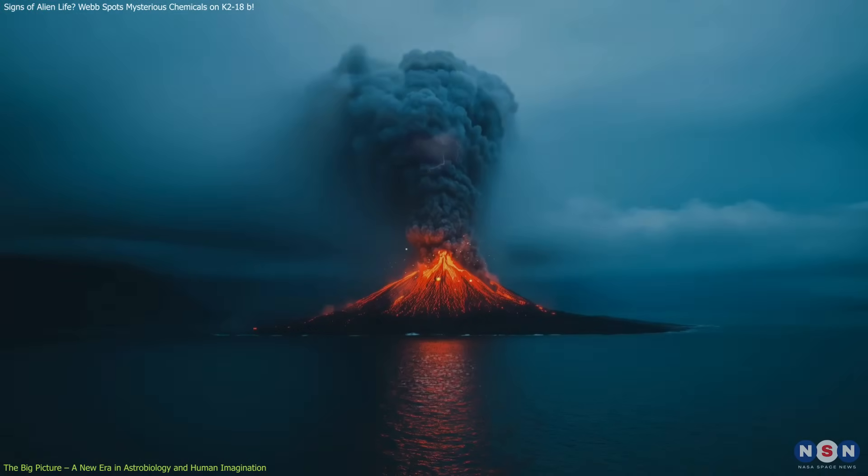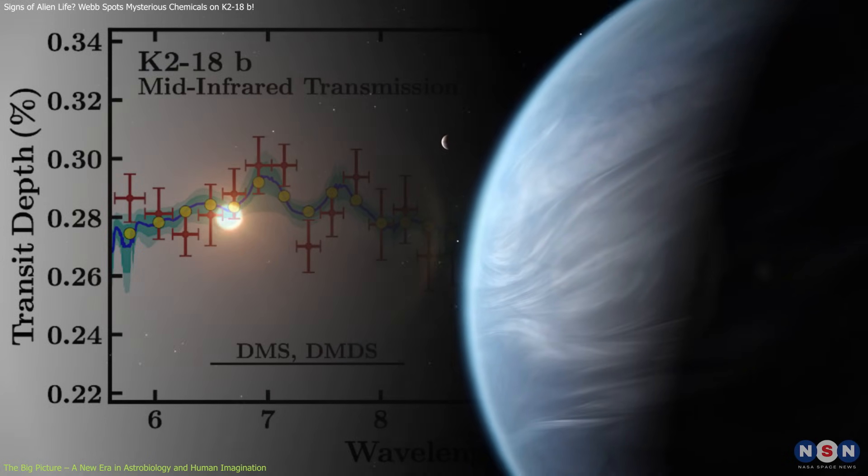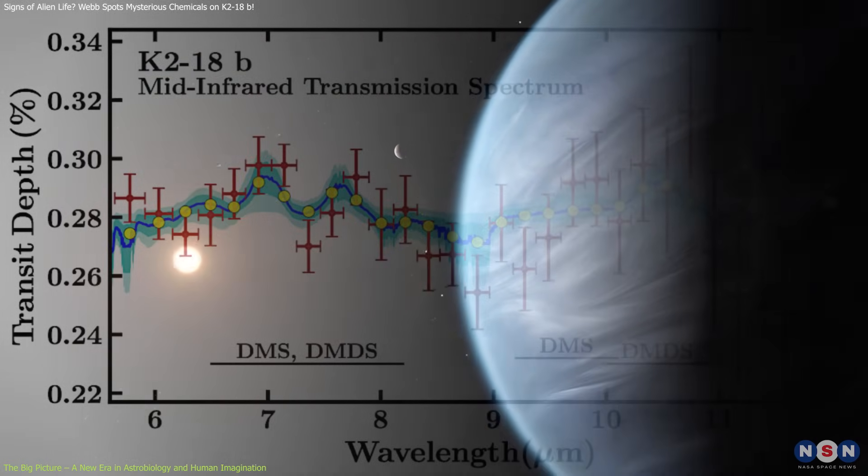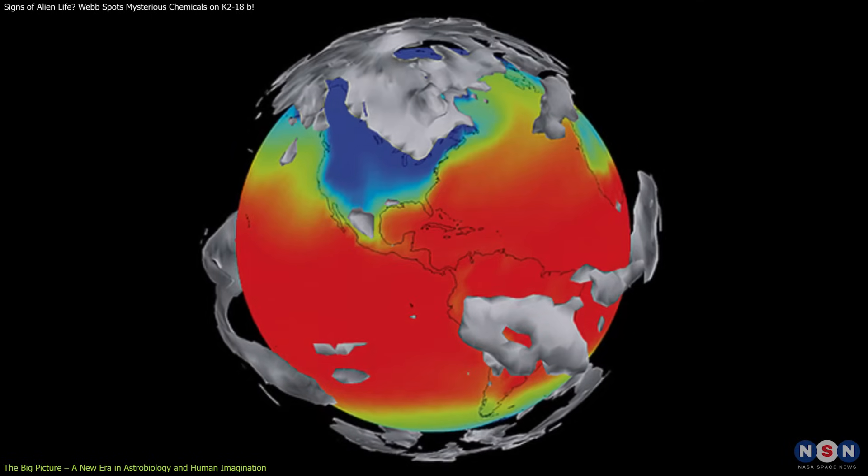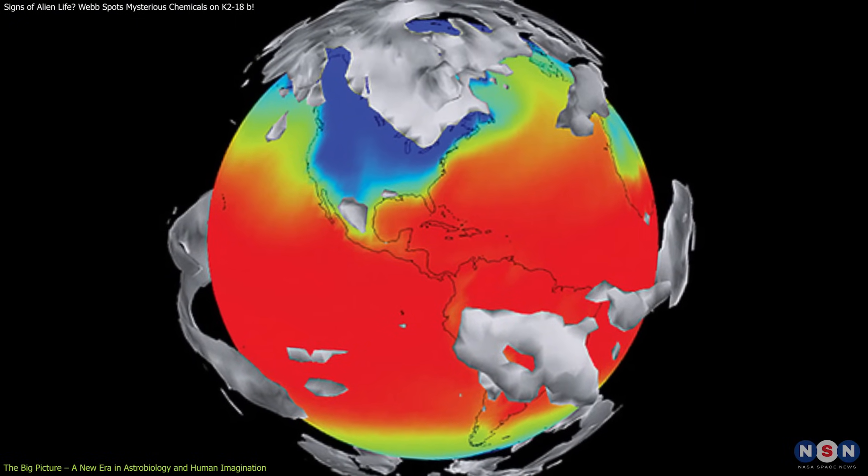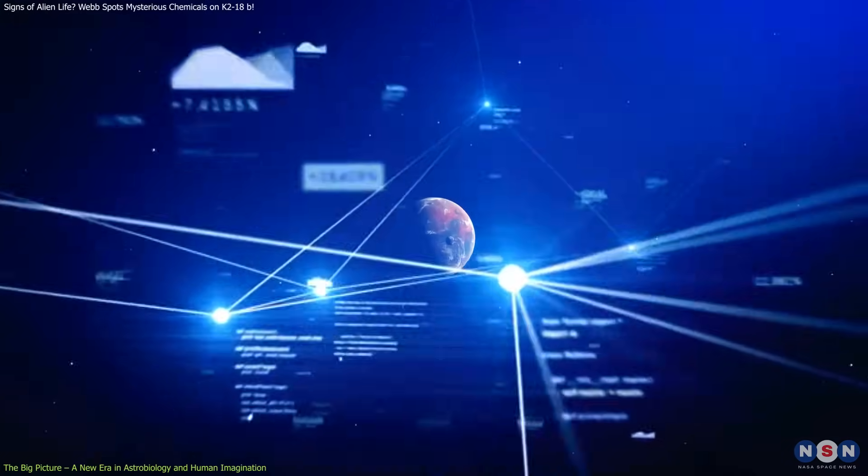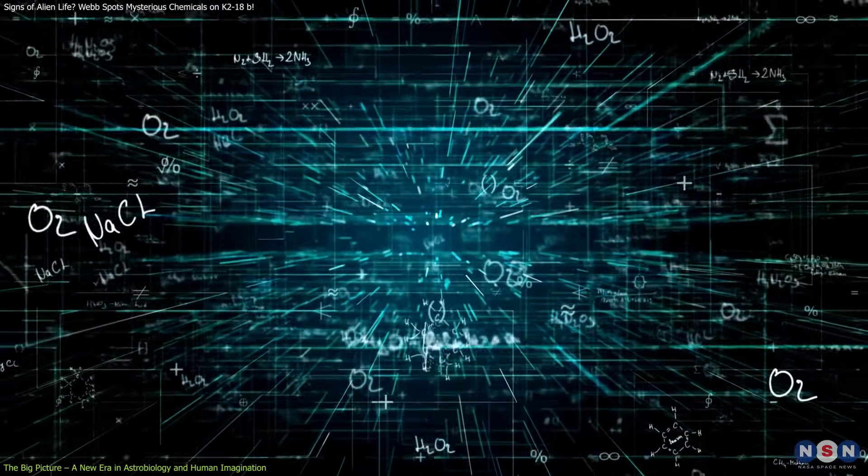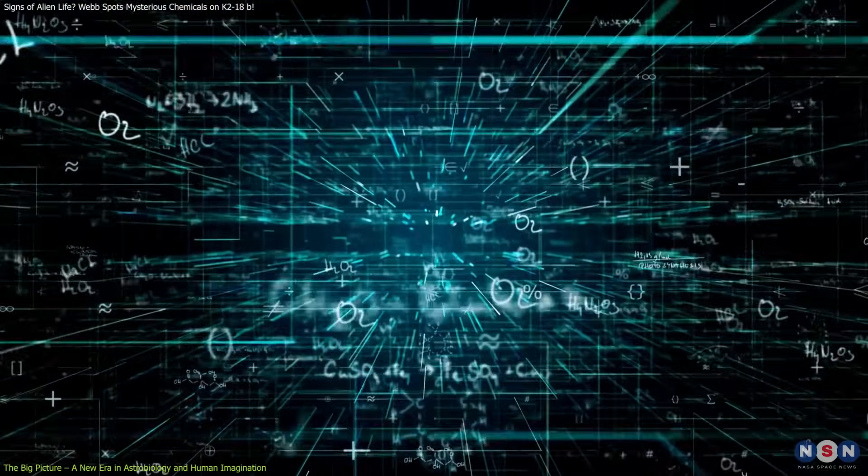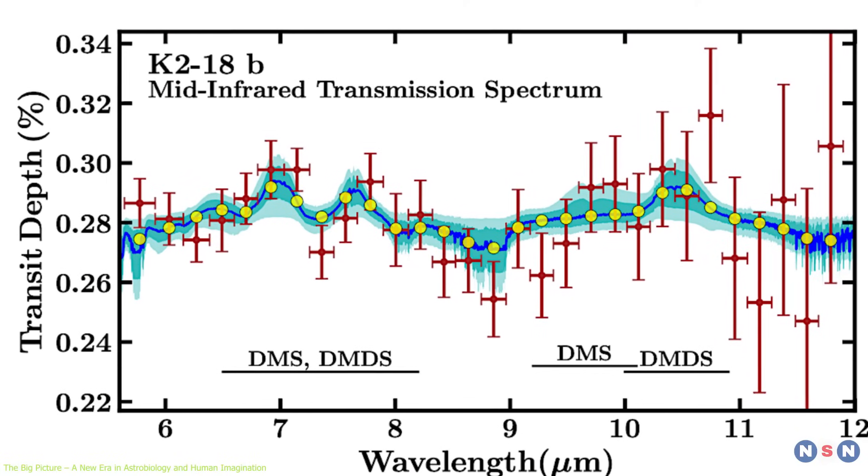But biosignatures aren't infallible. Volcanic gases, comet impacts, and other abiotic processes can sometimes create similar chemical patterns, known as false positives. To guard against this, scientists rely on sophisticated climate modeling, comparative data from multiple exoplanets, and simulations of exotic chemistry to ensure accurate interpretations.